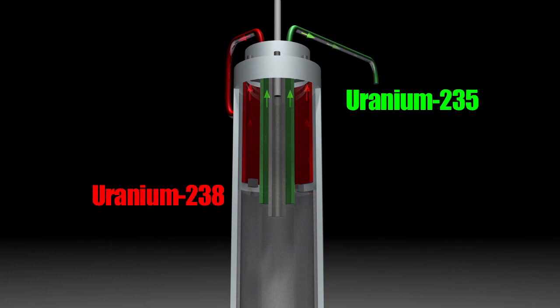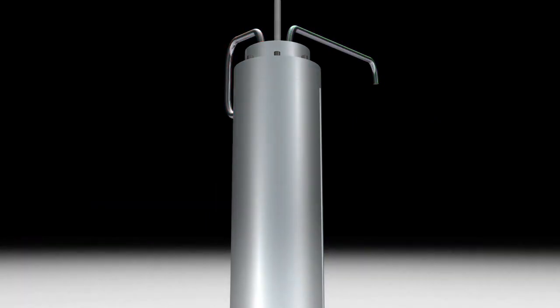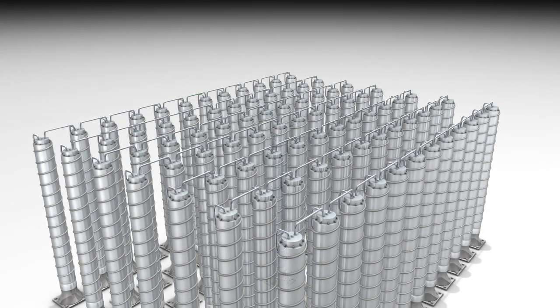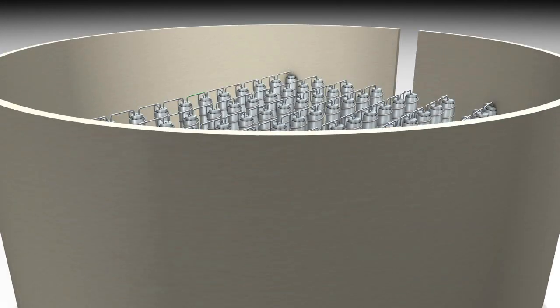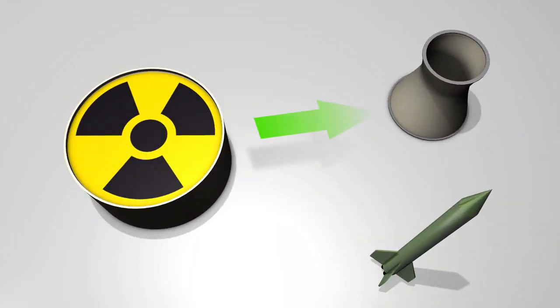Rotating cylinders separate the uranium-238 molecules from the lighter uranium-235. Many centrifuges are needed to obtain a significant amount of usable uranium.